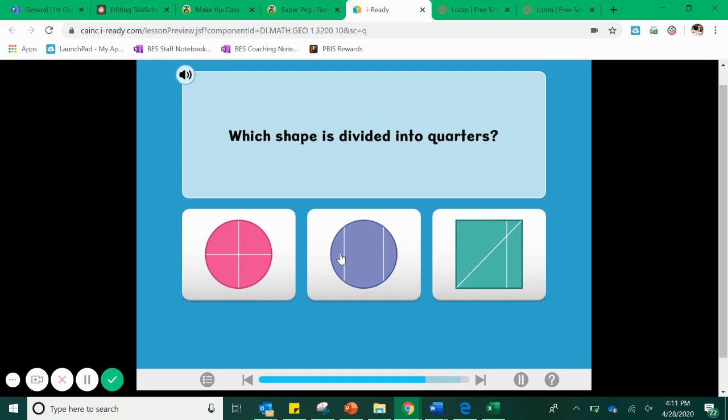Get rid of this circle. This is only one, two, three parts and they aren't even equal. The pink circle. One, two, three, four equal parts. They look exactly the same. This must be divided into quarters.